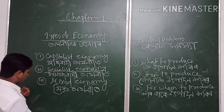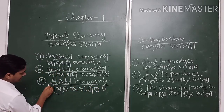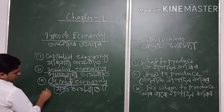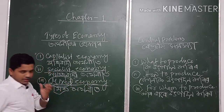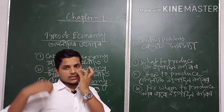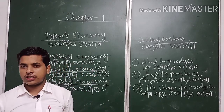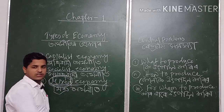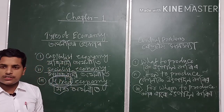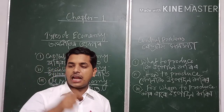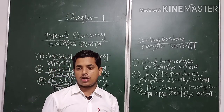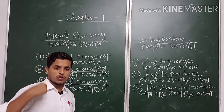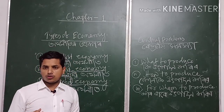The third type is mixed economy. The word mixed means a mixture. So mixed economy refers to those economies where there is both a socialist sector as well as a capitalist sector. Mixed economy is a mixture of both capitalist and socialist economy — a blending of public sector as well as private sector — and both exist and take their own decisions.